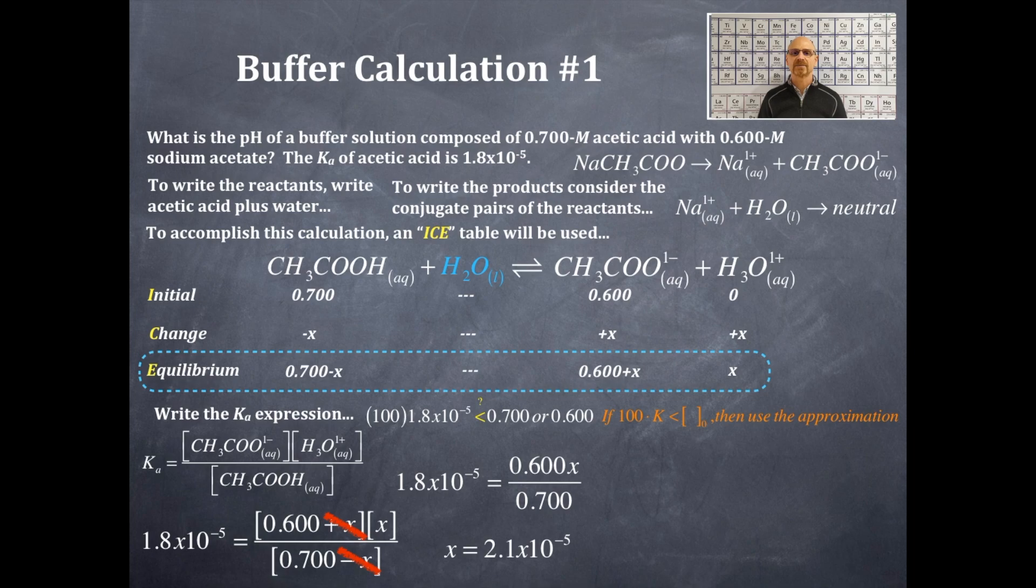Alright, so again, does your approximation work? Is it true that the approximation works? You should be able to plug this value in for x under your equilibrium concentrations and go 0.700 minus 2.1 times 10 to the negative 5. What number do you get? 0.70 using significant figures. And that is for the acetic acid concentration. For the acetate ion concentration: 0.600 plus 2.1 times 10 to the negative 5. What do you get? 0.600 using significant figures. Does the approximation hold true? Most certainly it does.